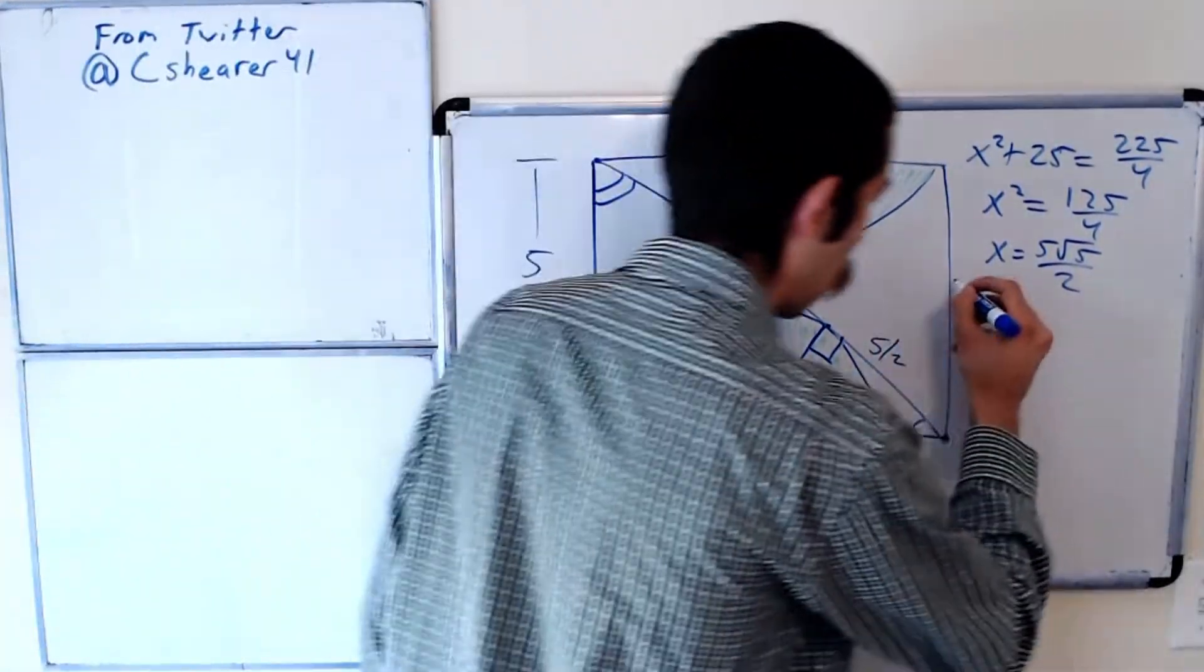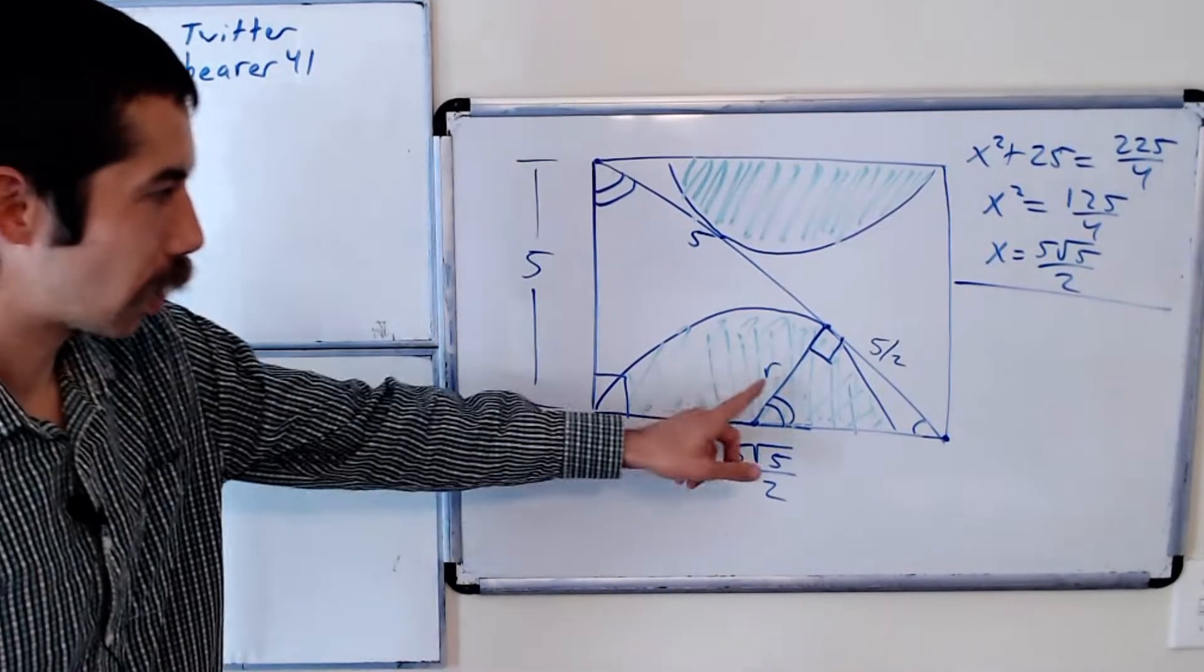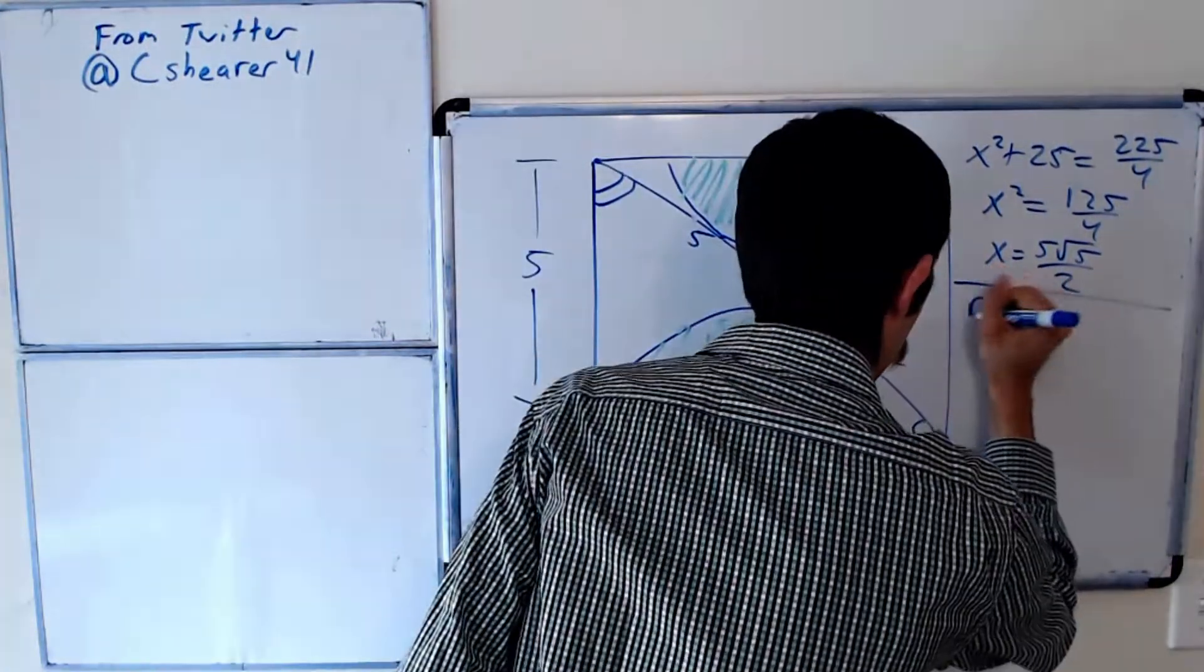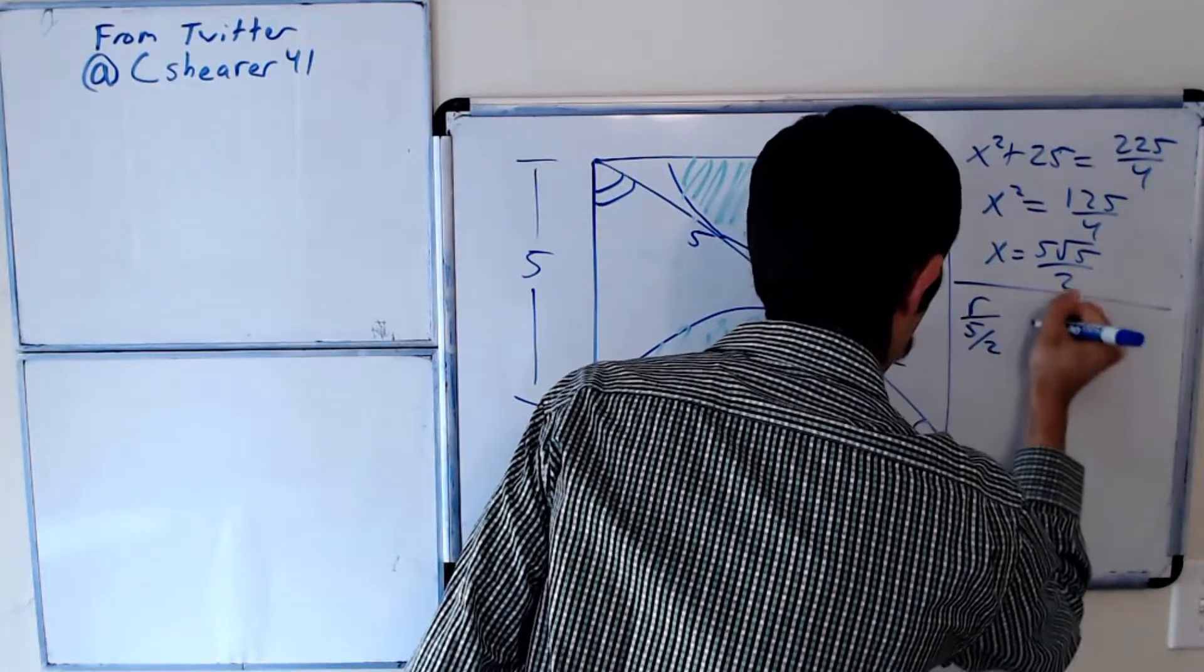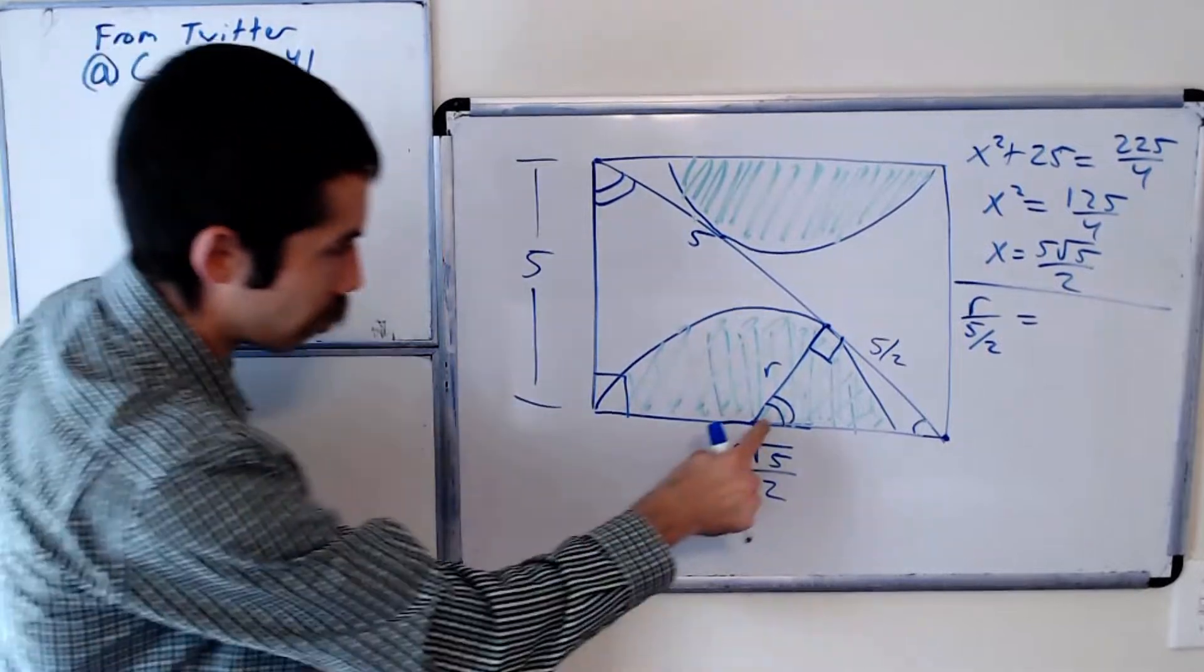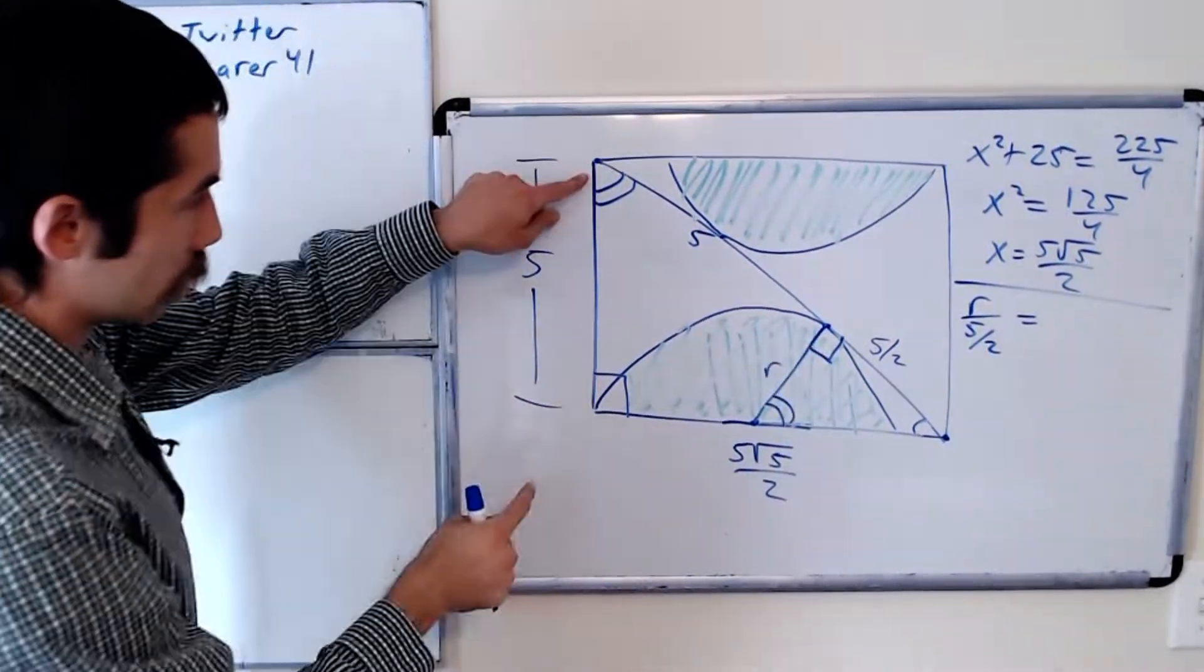And so, what do we know from the similar triangles? That the ratio of r to 5 halves is equal to, we go double arc to right angle, so double arc to right angle,